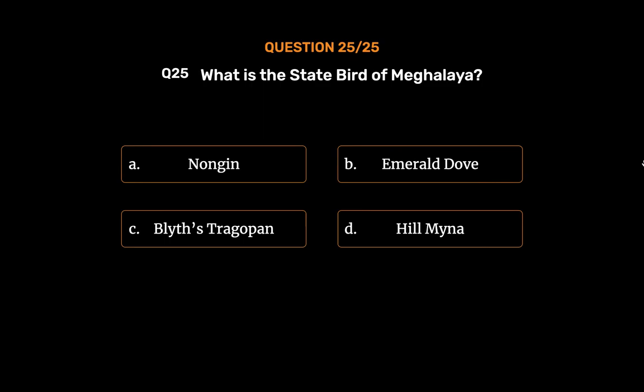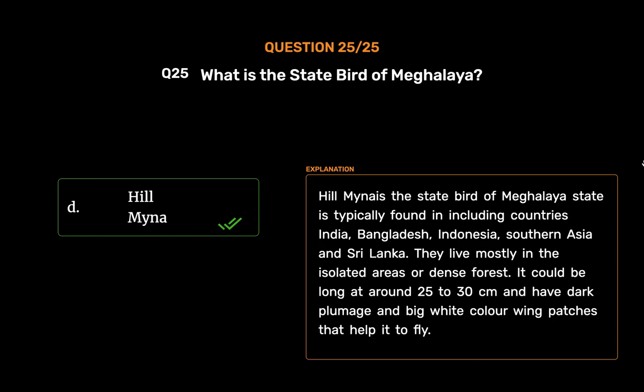The correct answer is Option D: Hill Myna. Hill Myna is the state bird of Meghalaya, typically found in countries including India, Bangladesh, Indonesia, Southern Asia, and Sri Lanka. They live mostly in isolated areas or dense forests. They can be around 25 to 30 centimeters long and have dark plumage and big white wing patches that help them fly.